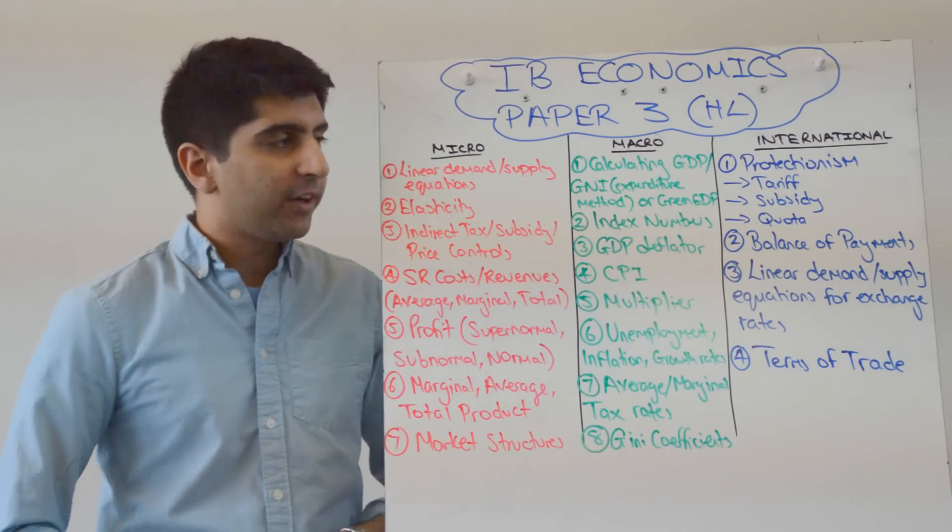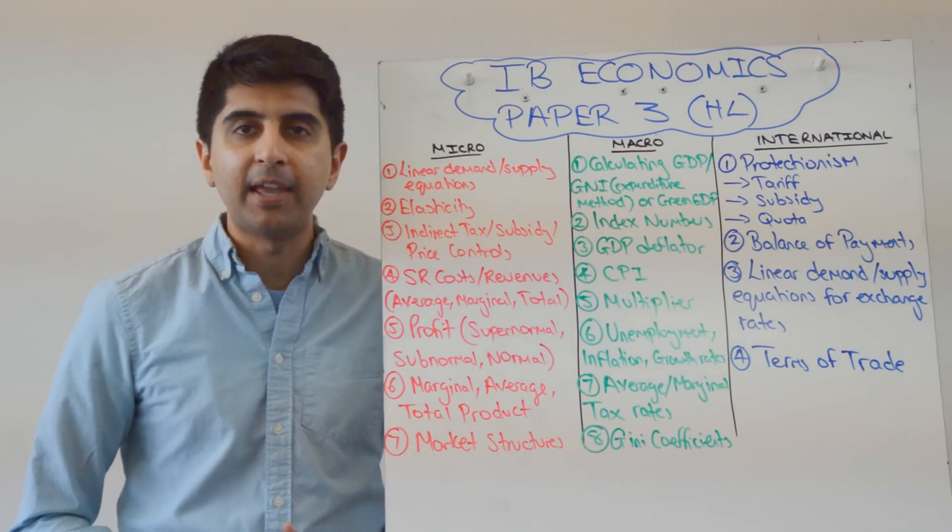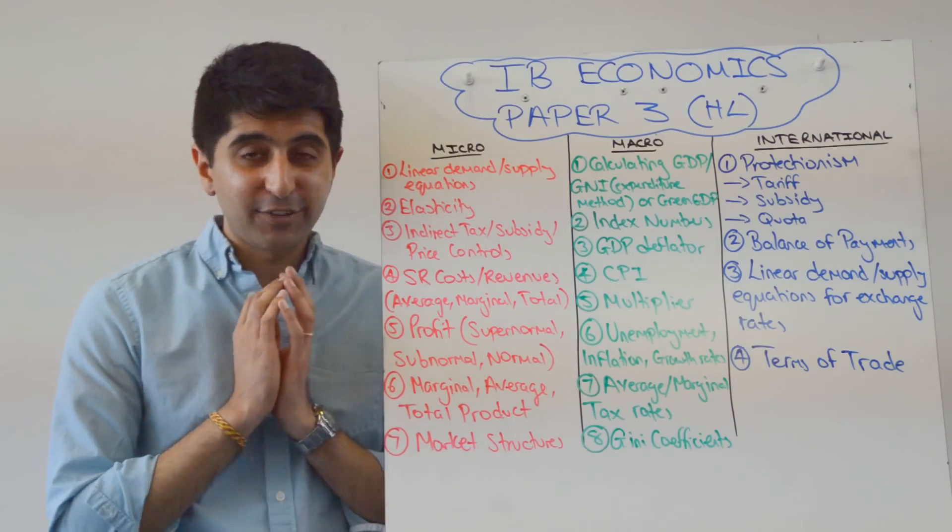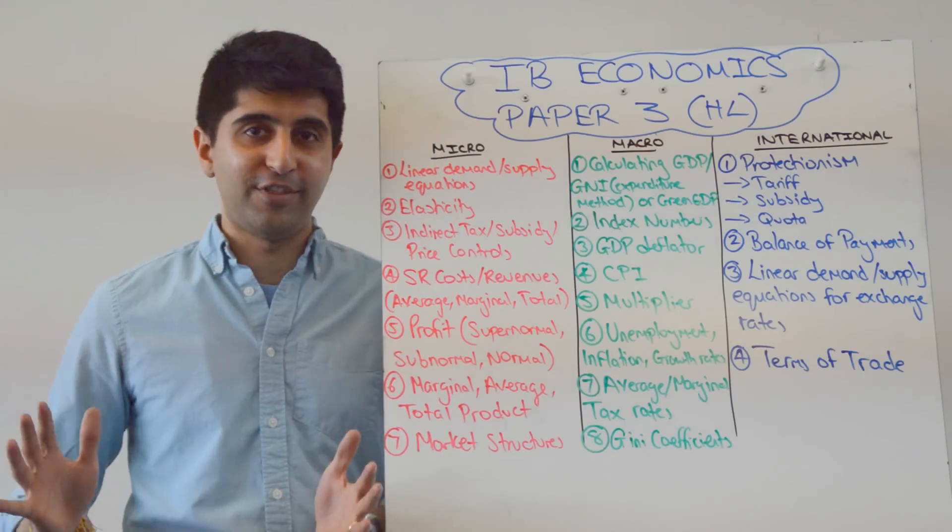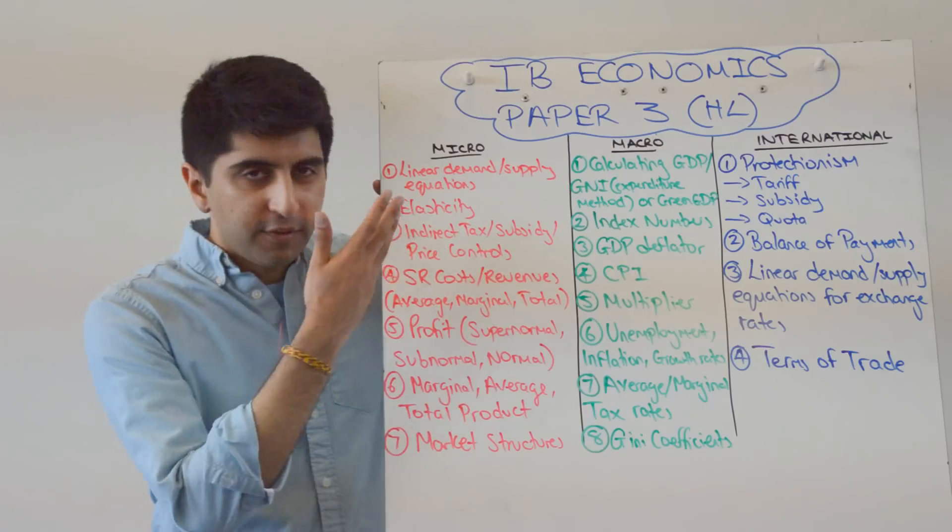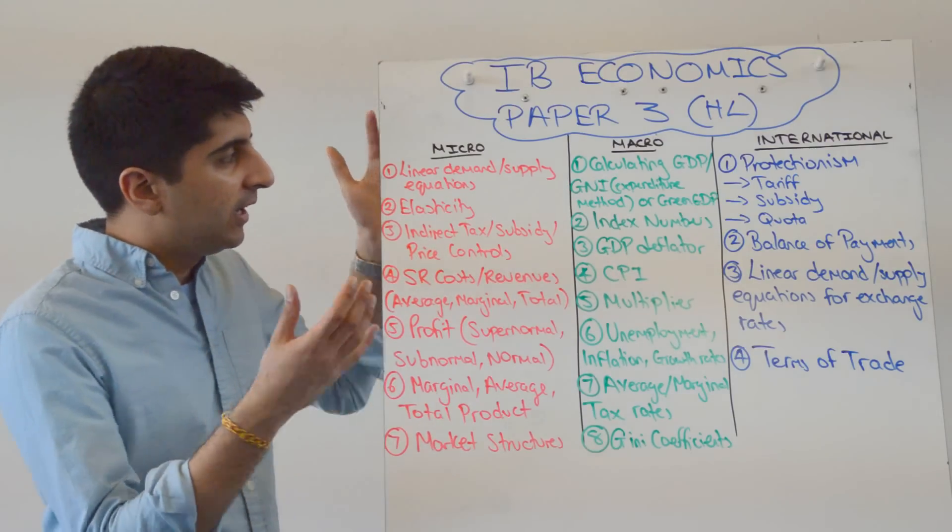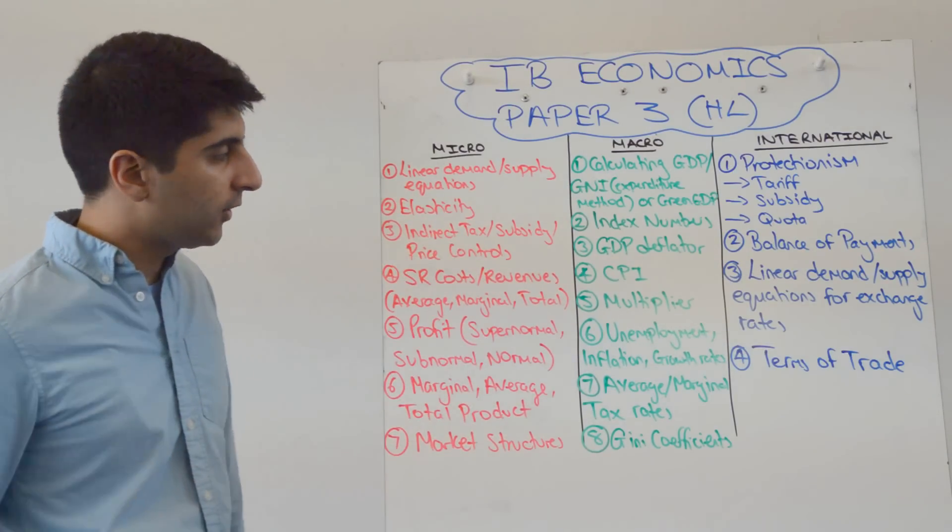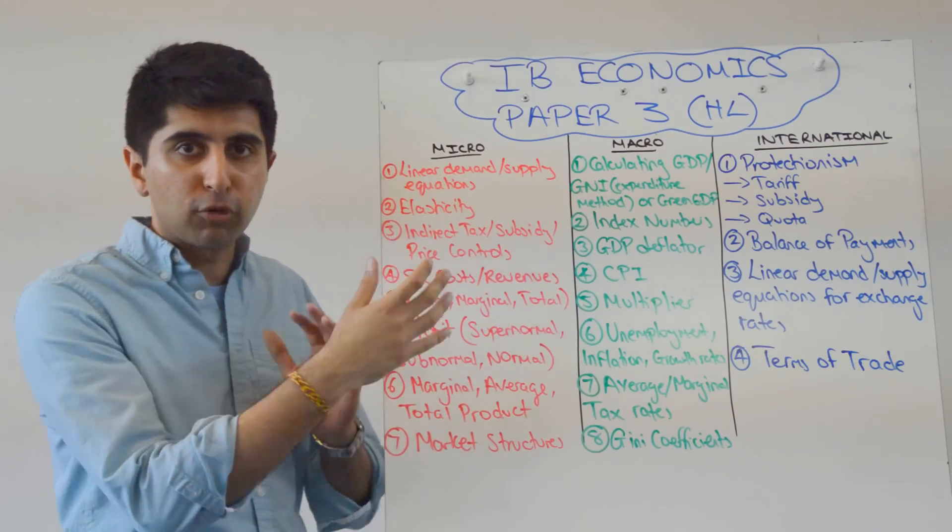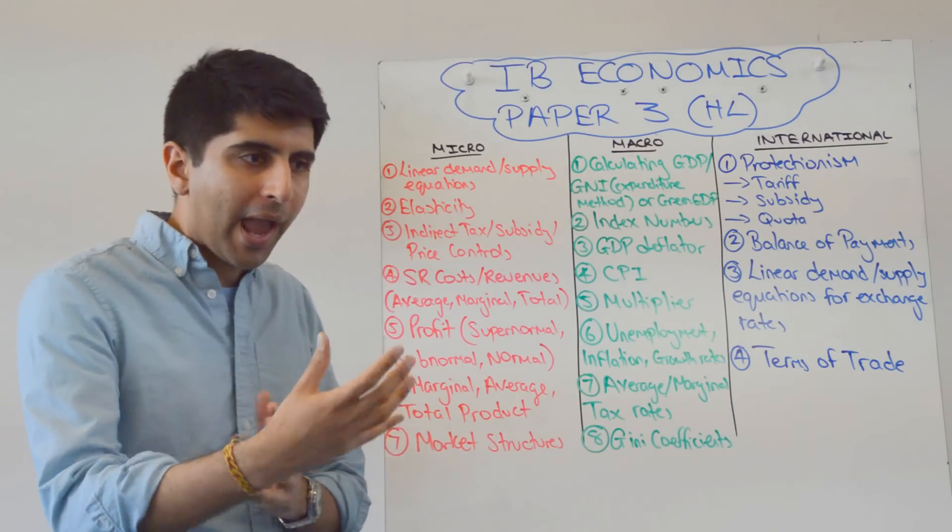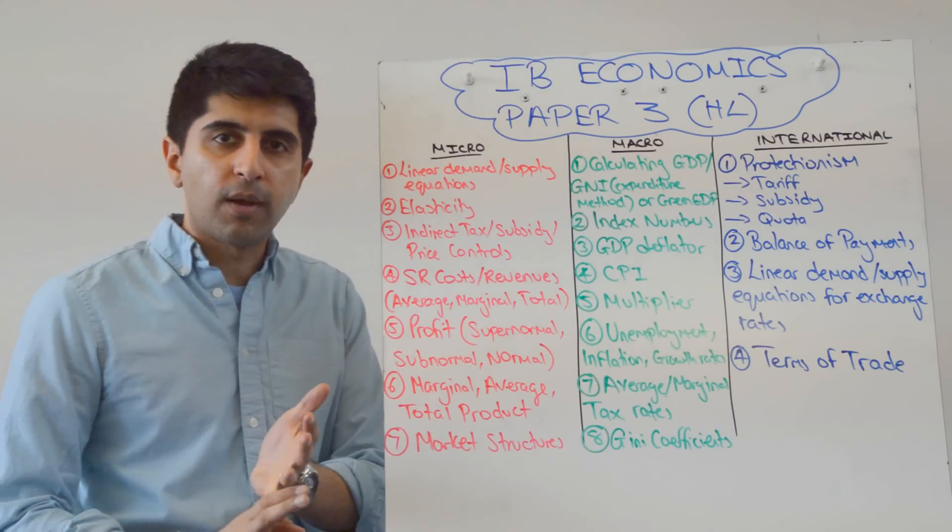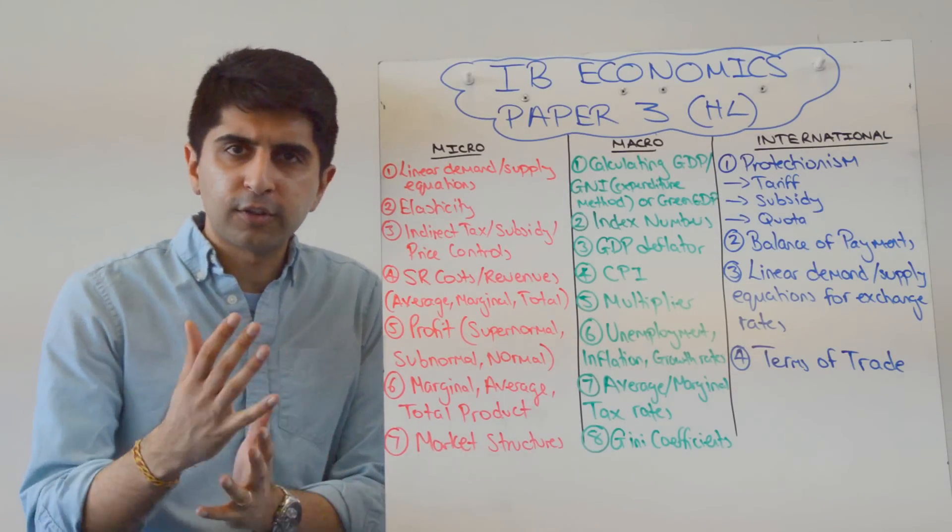Okay, so for calculation questions, these are the key topics that may feature. Remember, these are just for calculations. In terms of written questions, they can ask you anything. So you've got to know everything. But for calculation questions for microeconomics, if we go through the spec, we're looking at linear demand supply equations, elasticity calculations, indirect tax subsidy price controls. We're looking at diagrams related to that and you're having to work out areas, you know, cost of the government, revenue for the government, new producer revenue, old producer revenue, consumer burden, producer burden, those kind of things.